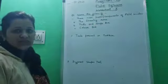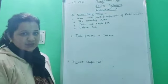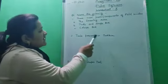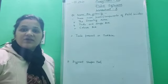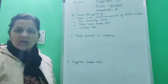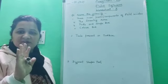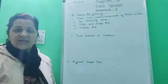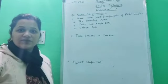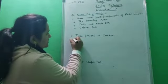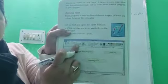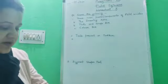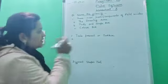Now come to question number two: tools present in tool box. So children, what are the various tools which are present in the tool box? Six different tools we have studied. The first tool present in the tool box is the pencil tool.